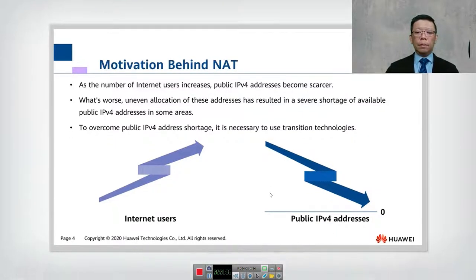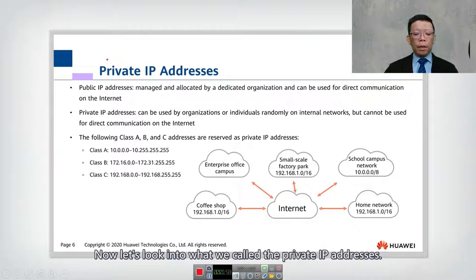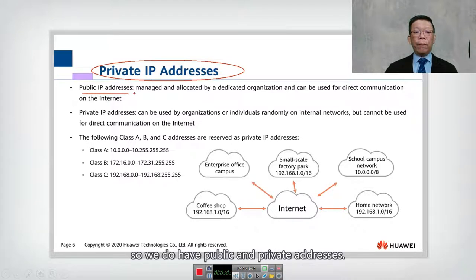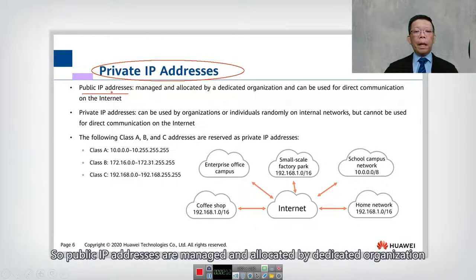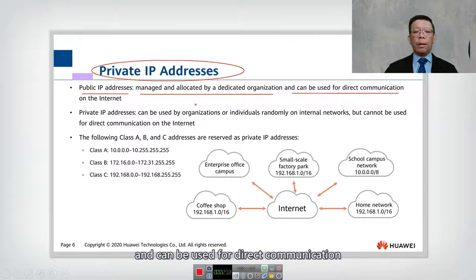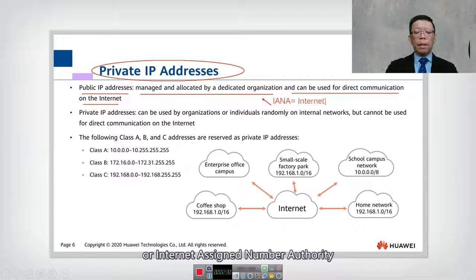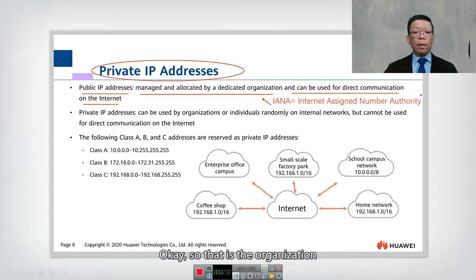Now let's look at what we call private IP addresses. We have both public and private IP addresses. Public IP addresses are managed and allocated by a dedicated organization and can be used for direct communication over the internet. The organization that manages them is called IANA, or the Internet Assigned Numbers Authority.